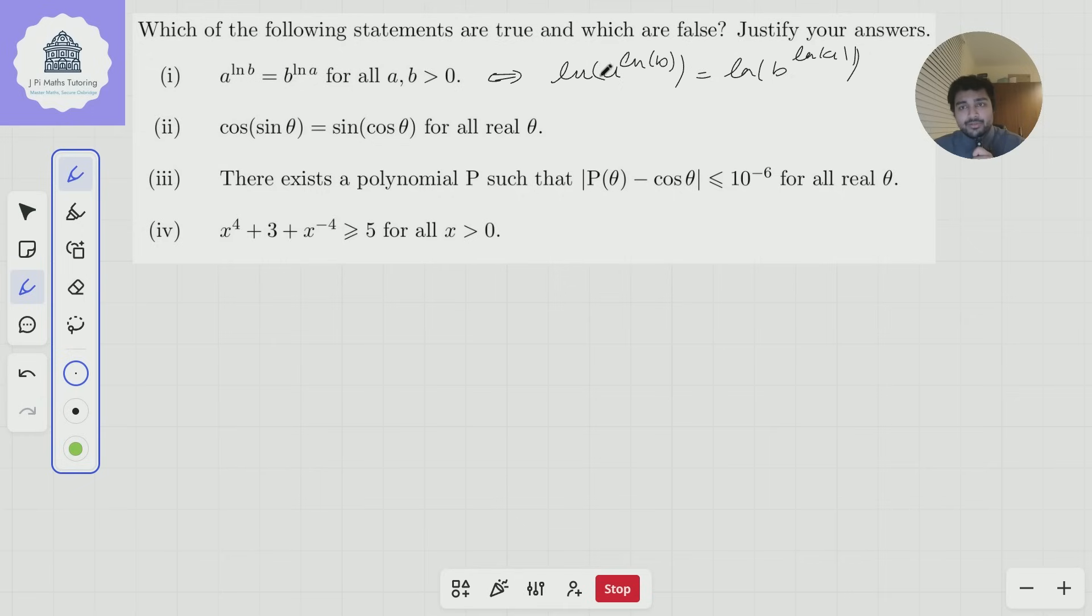But then that equation is true if and only if, well, if I just use log rules and bring this power down and this power down. But then on the left side, I've got ln a · ln b. And on the right side, I've also got ln a · ln b. So both the left side and the right side are equal, and so this original equation is also true as well.